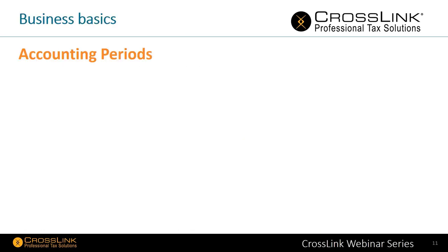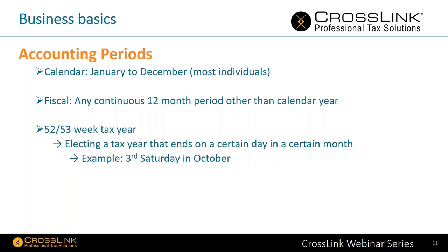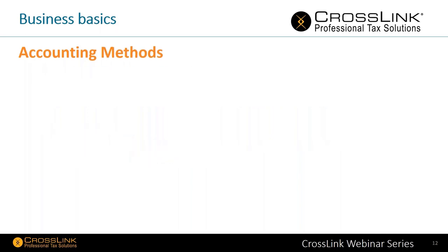Next, let's talk about business basics — things to remember regardless of what software you use. First, tax years: most individuals use the calendar year, January through December. However, a fiscal calendar can be any continuous 12-month period other than the calendar year. There's also the 52/53-week year, where a business elects a tax year ending on a specific day in a specific month — for example, the third Saturday in October.